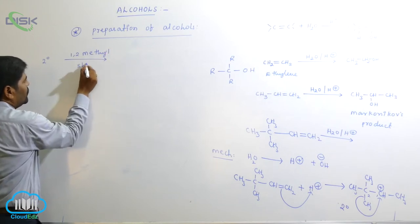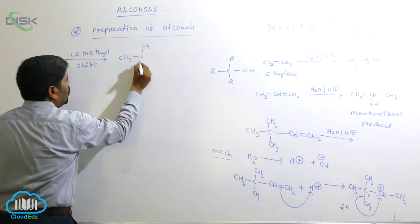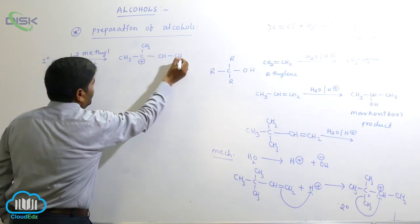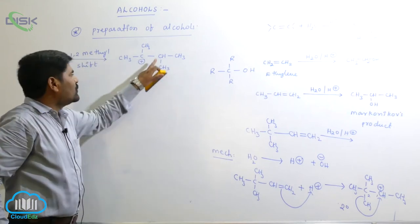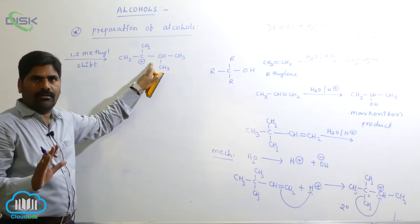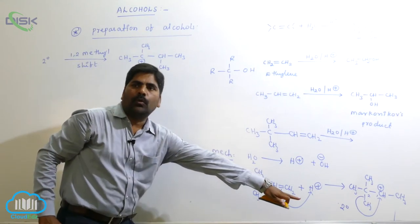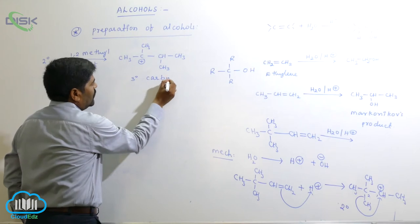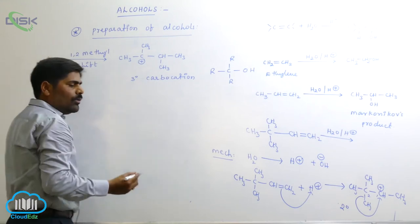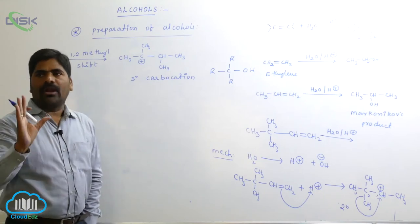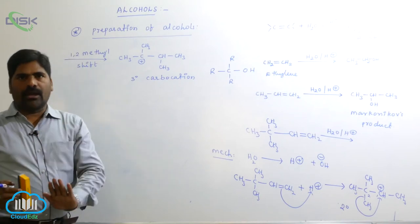After the 1,2-methyl shift, the result is a tertiary carbocation intermediate. This tertiary carbocation is more stable than the secondary carbocation. In any organic reaction, a product is always formed from the more stable intermediate — especially whenever carbocation rearrangement takes place.